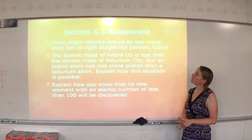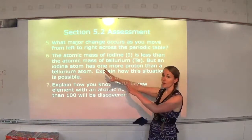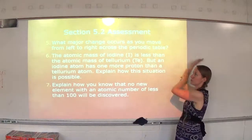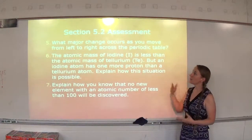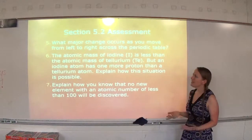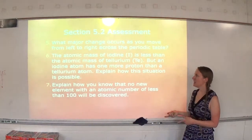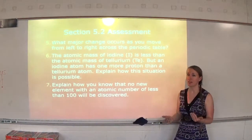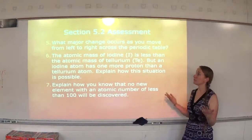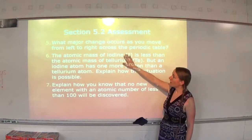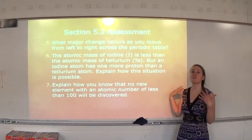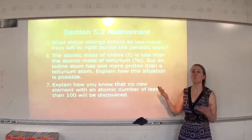Number five: what major change occurs as you move from left to right across the periodic table? As you move from the left where you have all your metals to the right where you have all your nonmetals, elements become less metallic. Number six: the atomic mass for iodine (I) is less than the atomic mass of tellurium (Te), but an iodine atom has one more proton than a tellurium atom — explain how this is possible. Atomic mass is not just based on protons, it's also based on neutrons, and elements can have different isotopes with different numbers of neutrons. Even though iodine has an extra proton, it has less atomic mass because the isotopes of tellurium must have more neutrons.